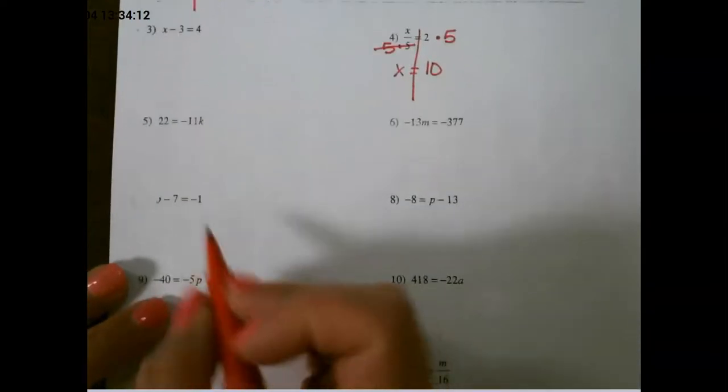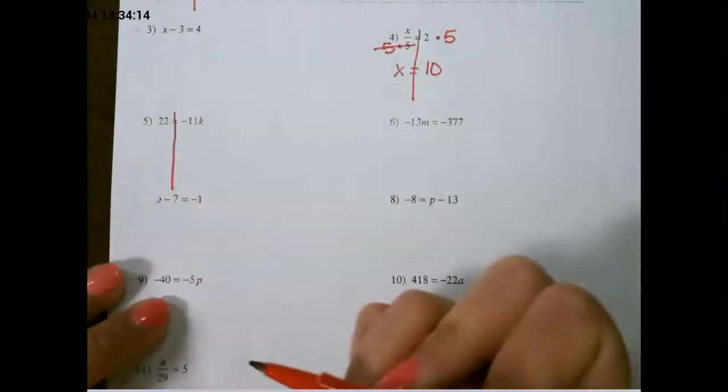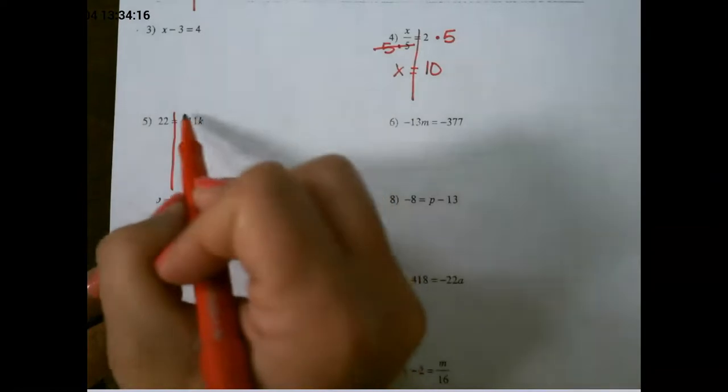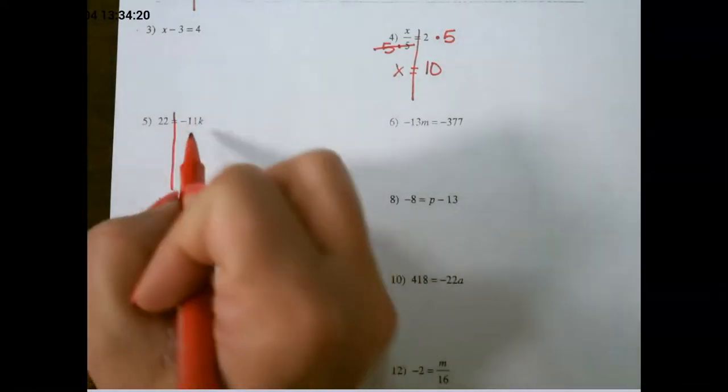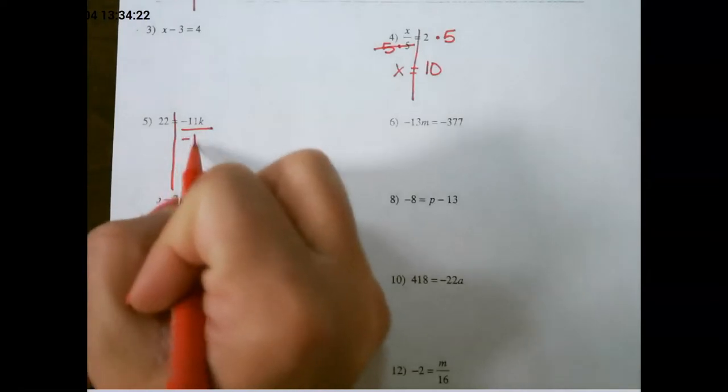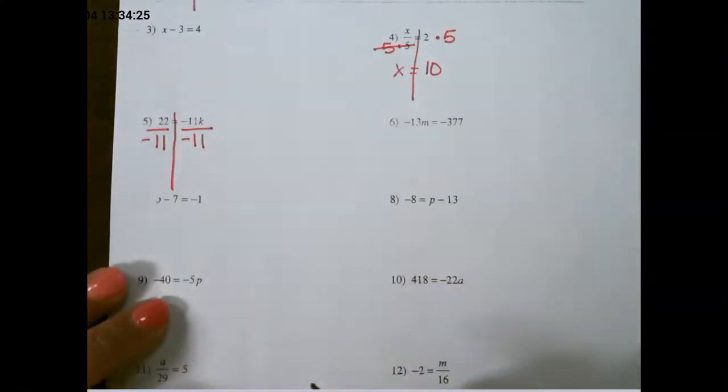For our last example, again draw the line through the equal sign and always start on the side that has the variable. This is negative 11 times k, so the inverse or opposite would be to divide by negative 11.